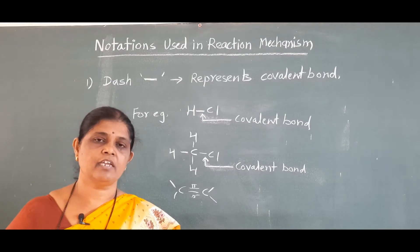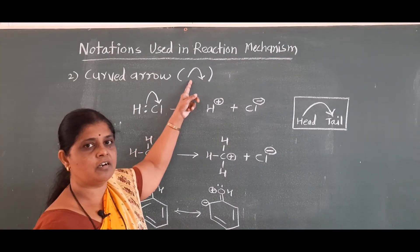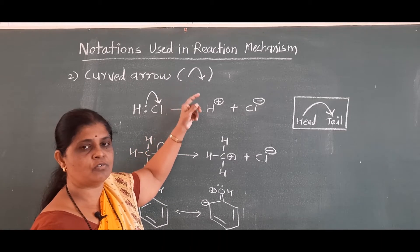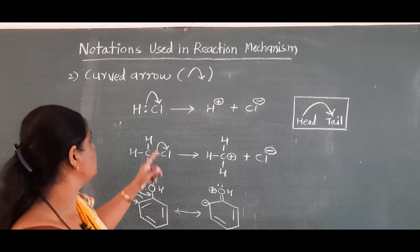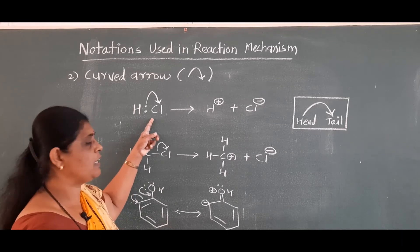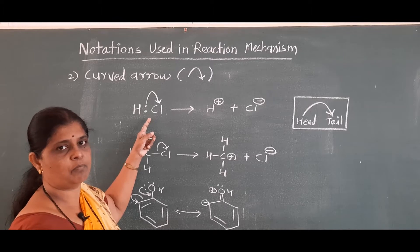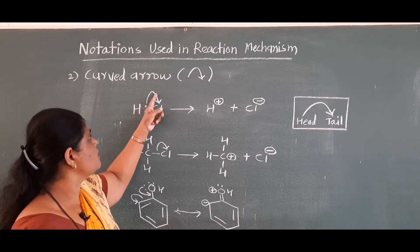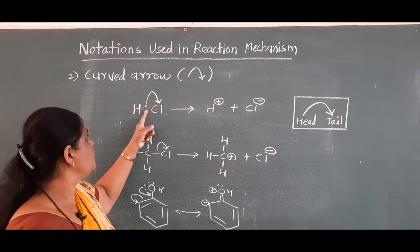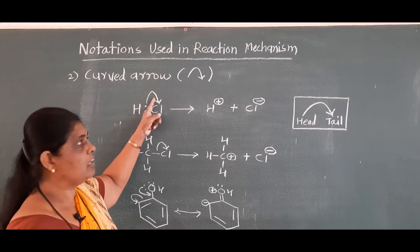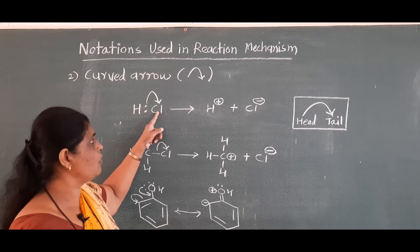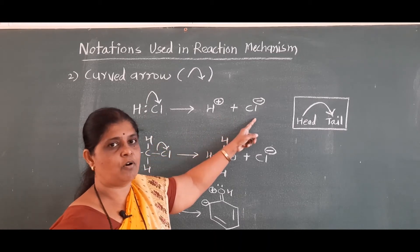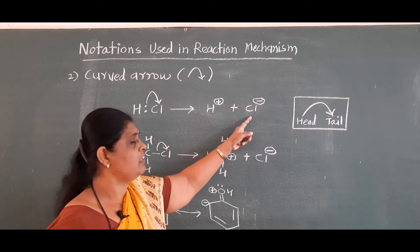The next notation is the curved arrow. When we see reaction mechanisms, this type of curved arrow is used to show the movement of a pair of electrons. For example, in case of hydrogen chloride, the bond is a covalent bond formed by sharing of electrons. The curved arrow indicates movement of a pair of electrons towards the chlorine atom. After movement of the electron pair, two ions are formed: H⁺ ion and chloride ion.